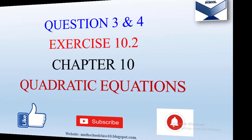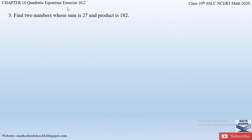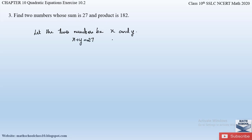Question number 3 from exercise 10.2, chapter 10: Quadratic Equations says — find two numbers whose sum is 27 and product is 182. Let the two numbers be x and y. From the question we can write: the sum of the two numbers, x plus y, is equal to 27, and the product of the two numbers, x times y, is equal to 182.